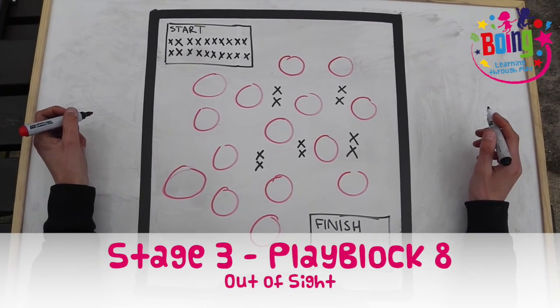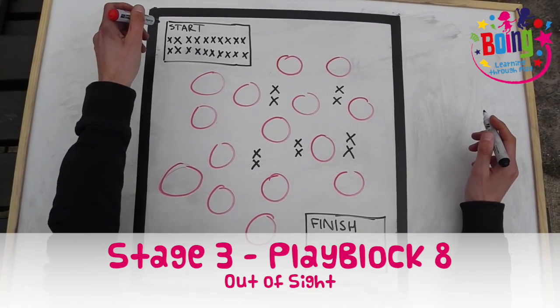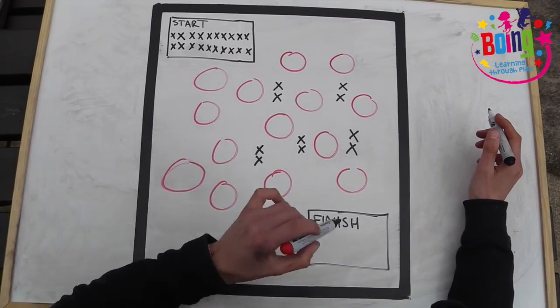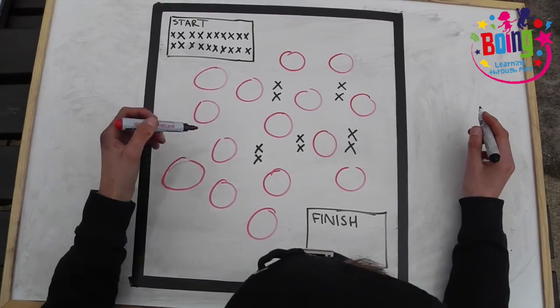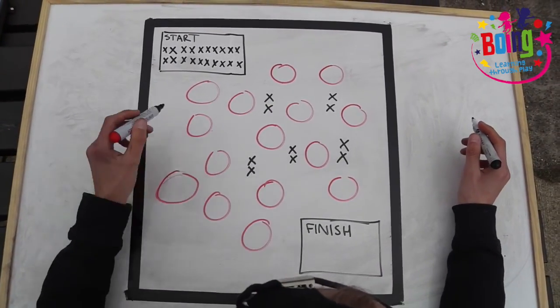Here's how to play out of sight. Create a start area in one end of the space you're working in and a finish area in the other. Place 15 hula hoops between the two areas.